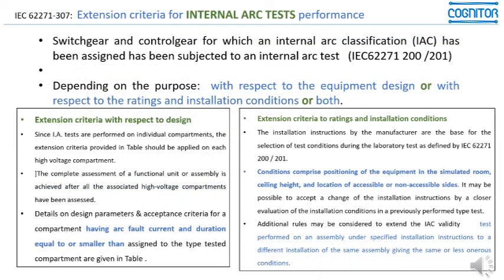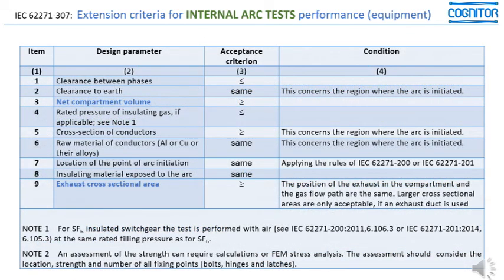The additional rules may be considered to extend validity for tests performed on an assembly under specified installation instructions to a different installation of the same assembly, given the same or less onerous conditions. This is an important opening, and it is not very difficult to verify if the essential criteria are met. Here you may see the design parameters and the acceptance criteria, and we have this list to check.